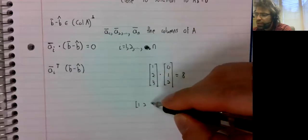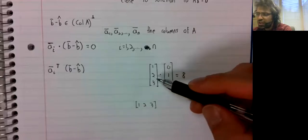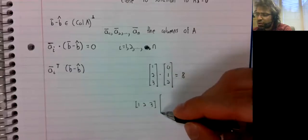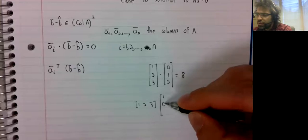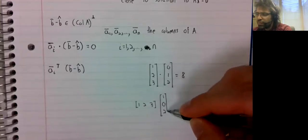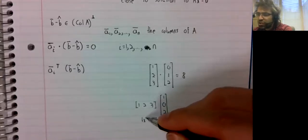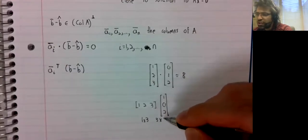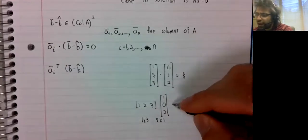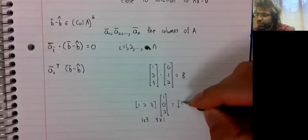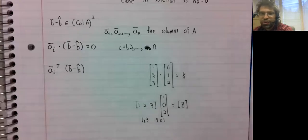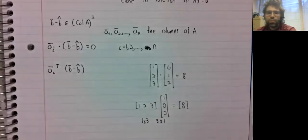If we multiply the transpose of this vector by this vector, this is a matrix, this is a matrix. The dimensions match. This product is defined. It's the matrix containing eight, the one by one matrix.